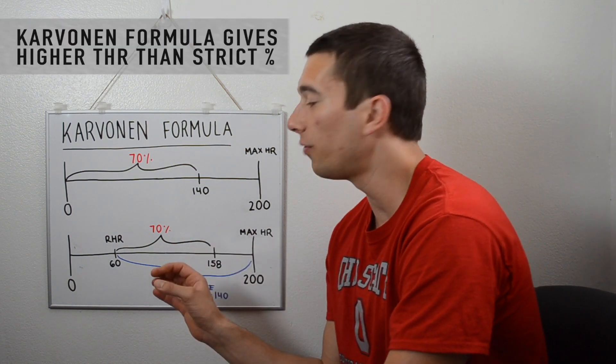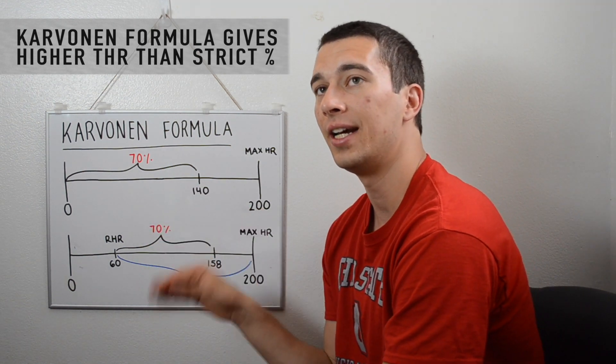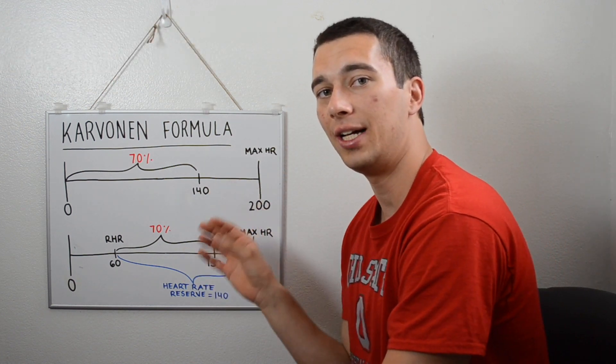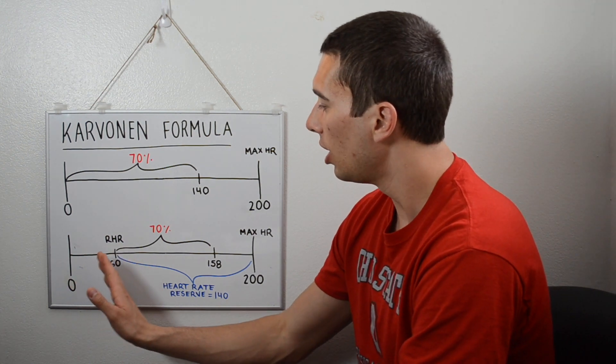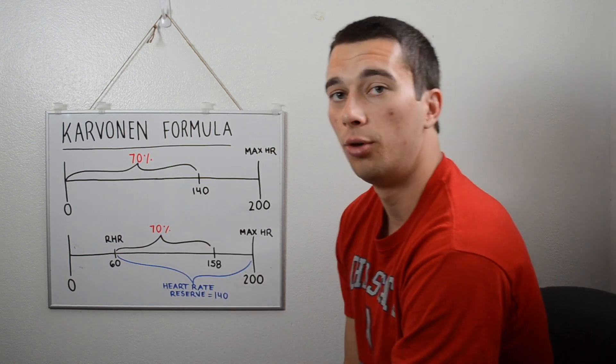So the Karvonen Formula will always get you a higher answer, a higher number for target heart rate than the strict percentage. And again, this allows us to individualize to the athlete's resting heart rate. So an athlete with a lower resting heart rate would actually move down a little bit, whereas an athlete with a higher resting heart rate would move up a little bit.